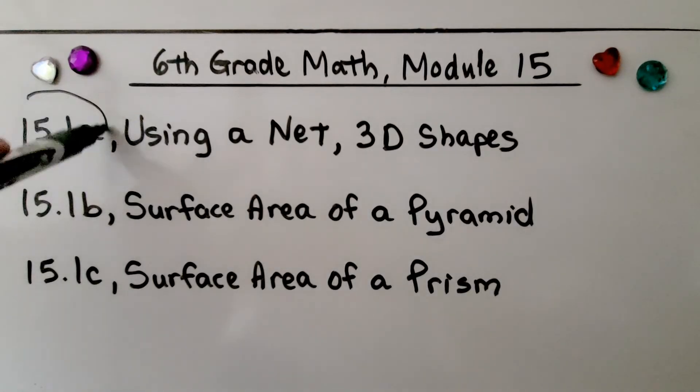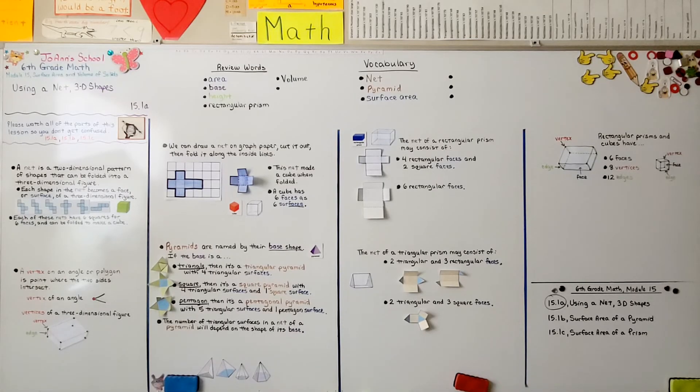We're finished with the first part of this lesson. We're going to move on to the second part, surface area of a pyramid. If you have an empty cereal box or an empty box from butter or tea bags, you can try unfolding it to look at the net. Have a wonderful day and I hope you join me for the second part of the lesson. Bye!